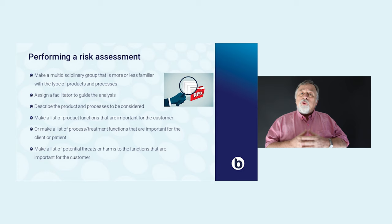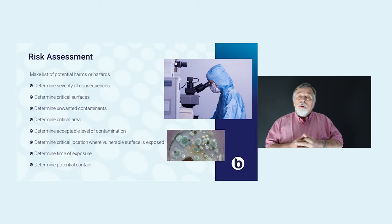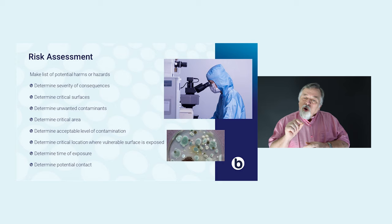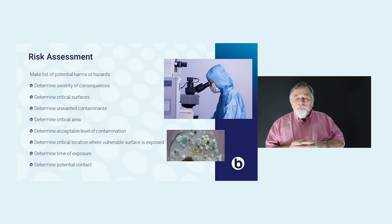When you have this list of harms, there are a number of things you can start to determine. You can determine the severity of the consequences — probably when you discuss this together, you can say the consequences are very severe, or they are minor. You can also determine the critical surface: what surface will be vulnerable for a harm, a hazard.